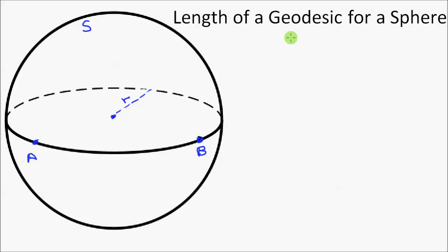This is known as the length of the geodesic of the sphere. We're going to colour that in so we know exactly what we're looking for. I'm going to use the vector dot product to find this arc length, or the length of this geodesic.